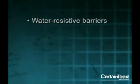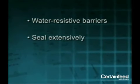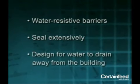Use water-resistive barriers and seal extensively to keep out wind-driven rain and water from other sources. The first line of defense against unwanted gravity-driven water is to design for water to drain away from the building.